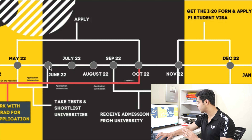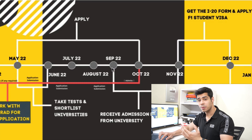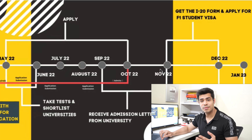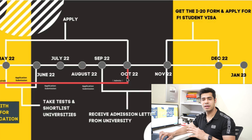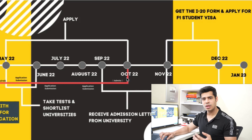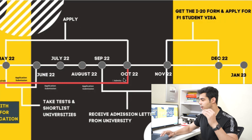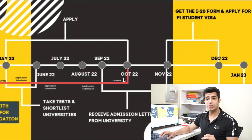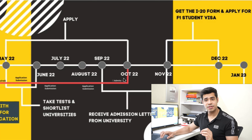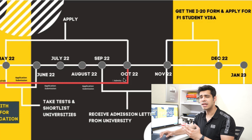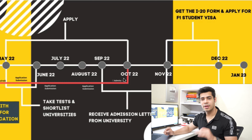From September itself, admits will start to roll in — September, October, and November you'll receive admission letters. I would not recommend leaving applications to the end; it's always better to apply early for the best funding and admits. Even if you come to me in October wanting to apply for spring 2023, I'll help — but you won't get maximum scholarships compared to someone who applied two months earlier.